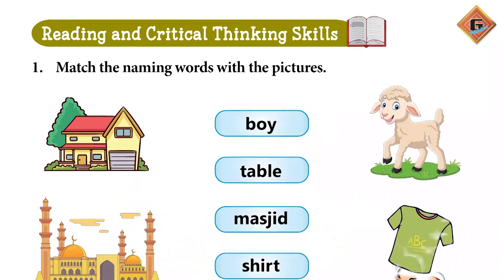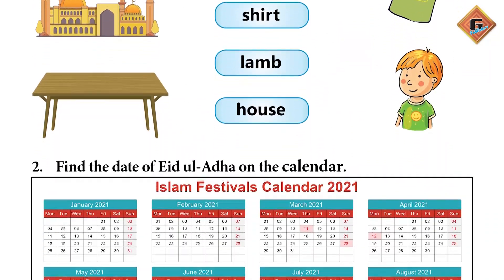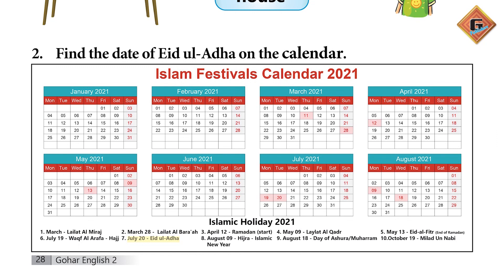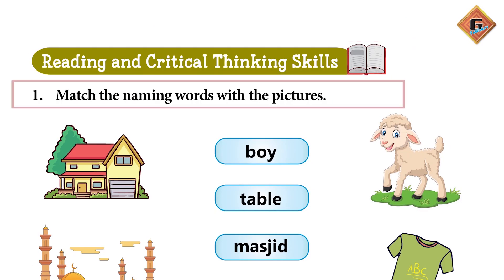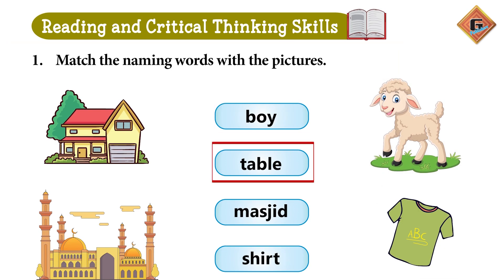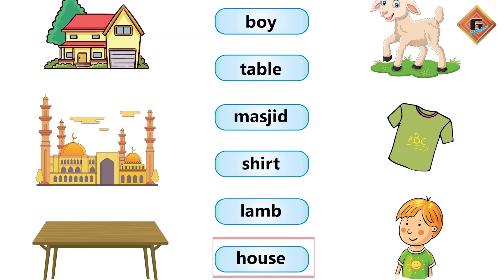Dear teachers, as you can see on our screen, Gohar English Book 2, page number 28 is reading and critical thinking skills. Our first question is: Match the naming words with the picture. You will see these names: Boy, Table, Mustard, Shirt, Lamb, and House. We will match them with relevant pictures.